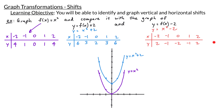Comparing the red table with the original purple table, the y values are all decreased by 2. Originally they were 4, 1, 0, 1, 4; now they are 2, -1, -2, -1, 2. Plotting (-2,2), (-1,-1), (0,-2), (1,-1), (2,2) and connecting them gives the graph of y = x² - 2. This red graph is our purple graph moved down 2 units — we call this a shift down 2 units.